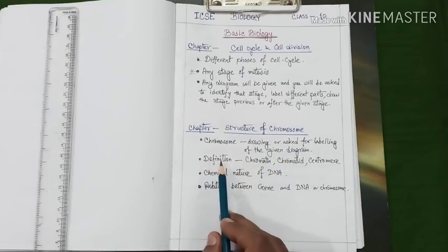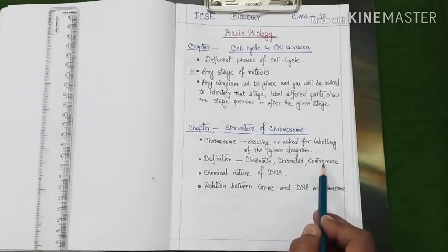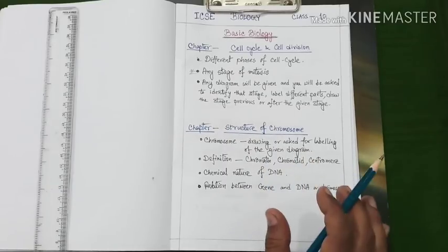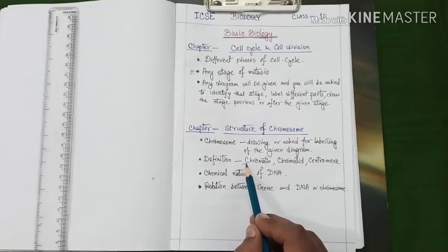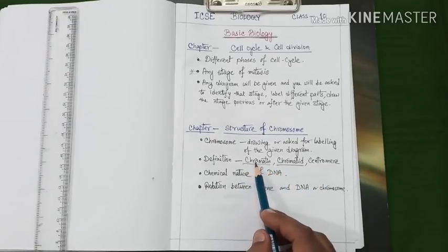Next important question is definition. Definitions like chromatin, chromatid, and centromere. These are very important definitions under this topic and these portions may appear in different questions like difference between chromatin and chromatid.